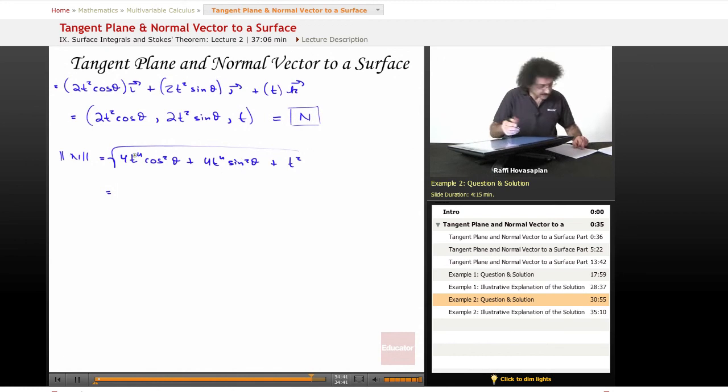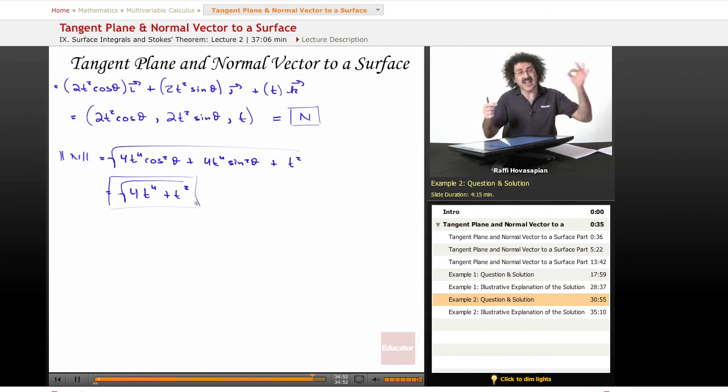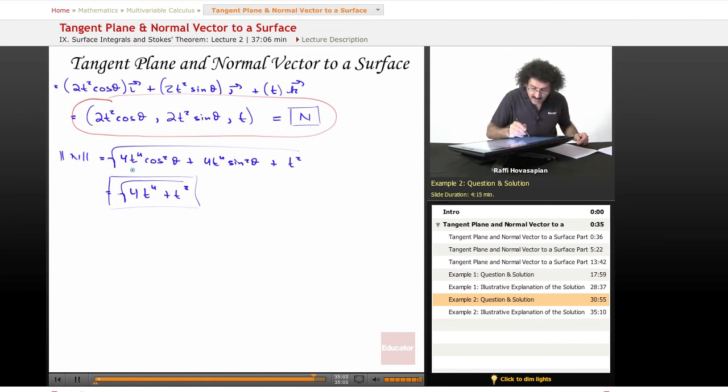All under the radical, and the cosine squared and the sine squared, I factor out the 4t⁴, I end up with 4t⁴ plus t², all under the radical. This gives me the norm, the length of that vector at a particular value of t. My normal vector is this one. It is a vector. This is the norm of that vector, it's the magnitude of that vector, it's the length of that vector.